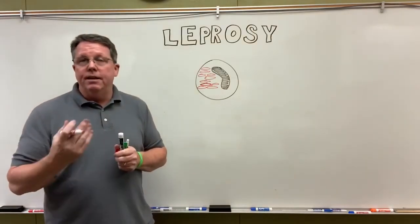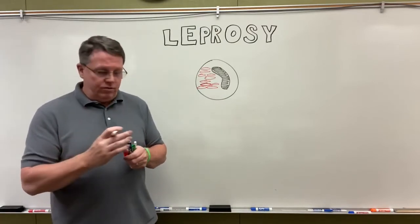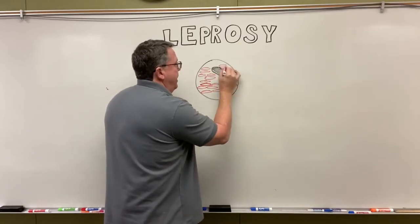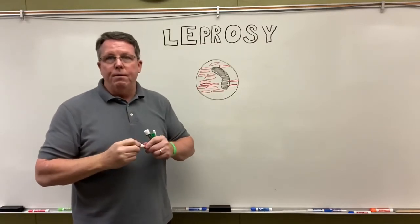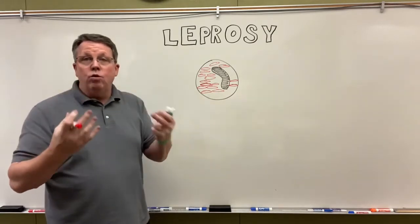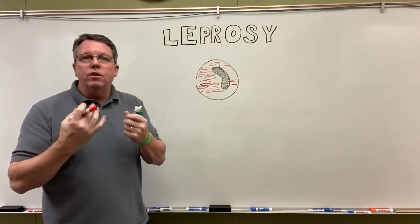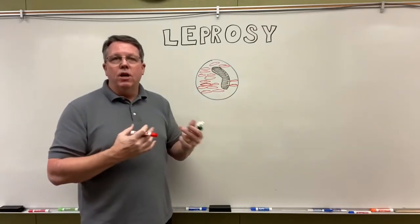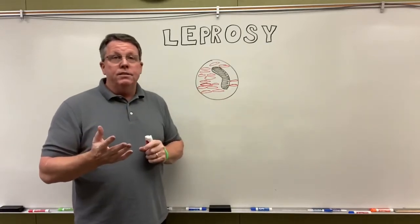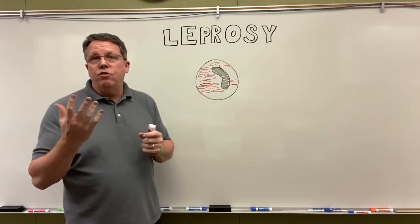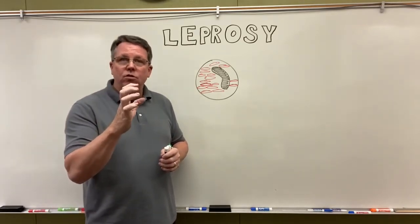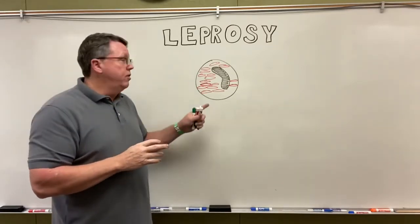In lepromatous leprosy, the bacteria multiplying in macrophages in the skin causes papules or bumps. It can also affect nasal passages and start to destroy the membranes around the face, giving a 'lion face' appearance. Because it's affecting the nervous system, blood supply to fingers and toes may be cut off, leading to necrosis where they turn black and fall off. The hand may also develop a claw hand deformity.